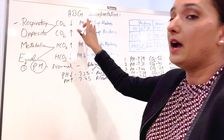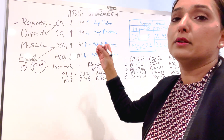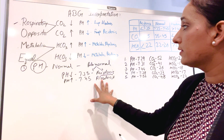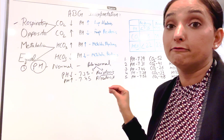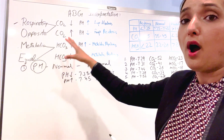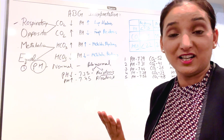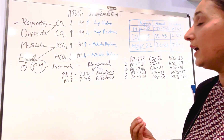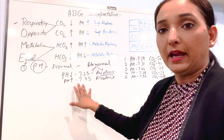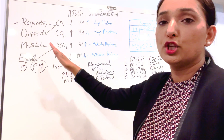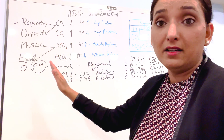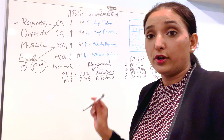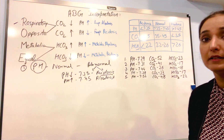If carbon dioxide is going high, that means body is going into acidosis. Then the question is: which system is involved — is it respiratory acidosis or metabolic acidosis? That is the main thing students get confused about. Once you've determined acidosis or alkalosis from pH, come to respiratory and metabolic — use the ROME method.